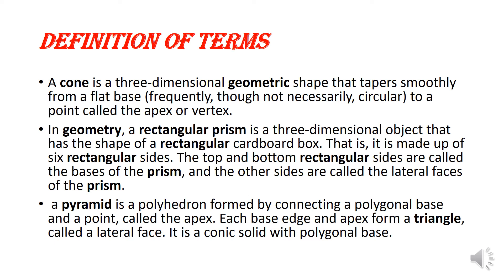In geometry, a rectangular prism is a three-dimensional object that has the shape of a rectangular box. That is, it is made up of six rectangular sides. The top and bottom rectangular sides are called the bases of the prism, and the other sides are called the lateral faces of the prism.